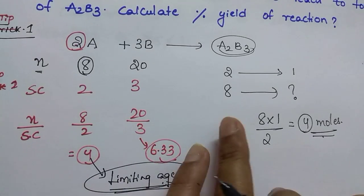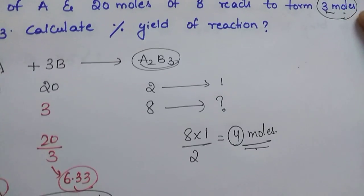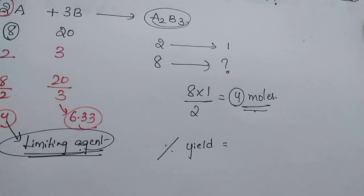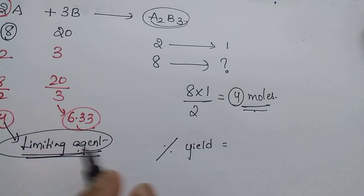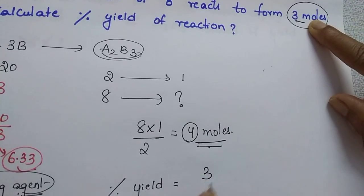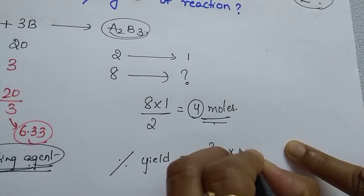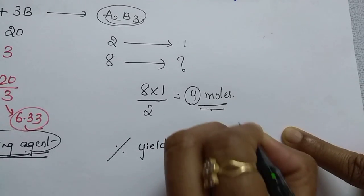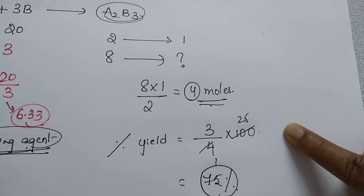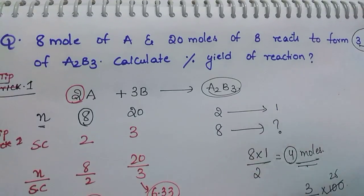From this reaction we are expecting 4 moles of product, but according to the question only 3 moles are actually formed. So: percent yield = actual yield ÷ theoretical yield × 100 = 3 ÷ 4 × 100 = 75%. The percent yield is 75%. The main trick is: you must find the limiting reagent first, otherwise you will find the question very tough.